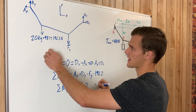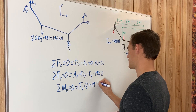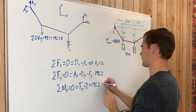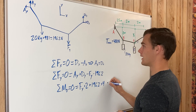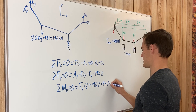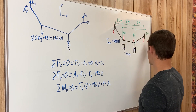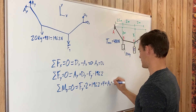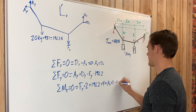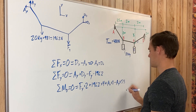The 196.2 N force also causes counterclockwise rotation, so we add 196.2 times 4 (its distance from D). A sub x also causes counterclockwise rotation, so we add A sub x times 1 meter. Finally, A sub y causes clockwise rotation, which is negative, so we subtract A sub y multiplied by its distance of 5.5 meters.